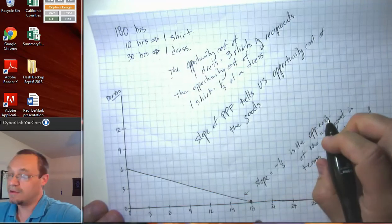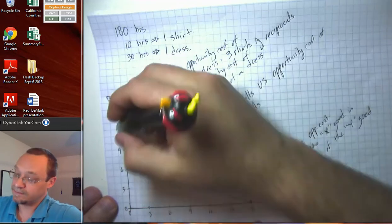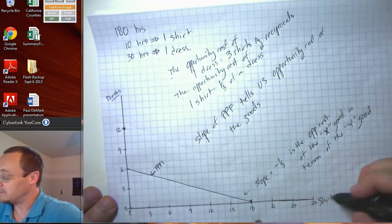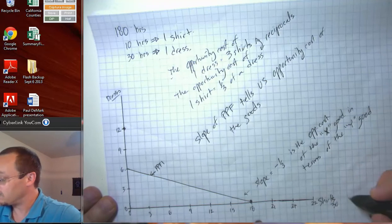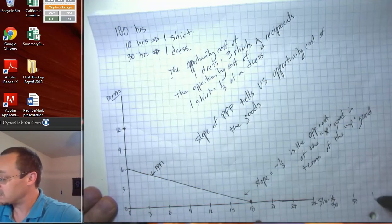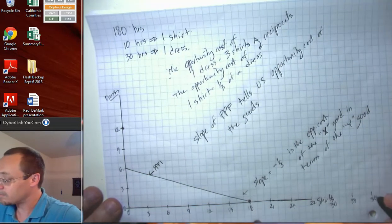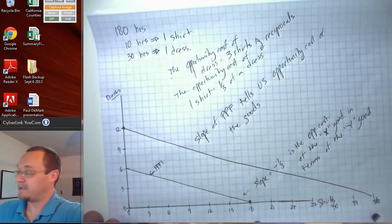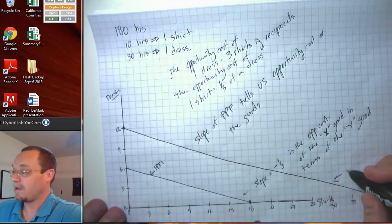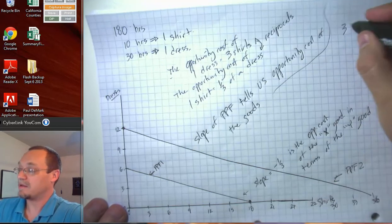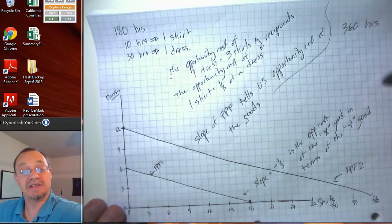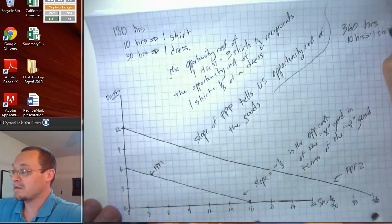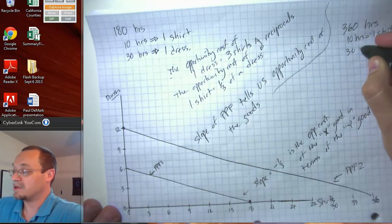So for example, notice there are two different ways. Let's call this guy PPF one. There's two different ways to get out to a PPF two, three, three, six. There's two different ways to get out to a PPF that would be out here. Call that PPF two. One way would be if we had 360 hours available. If we had 360 hours available and the same labor productivity numbers, then we could obtain that PPF.